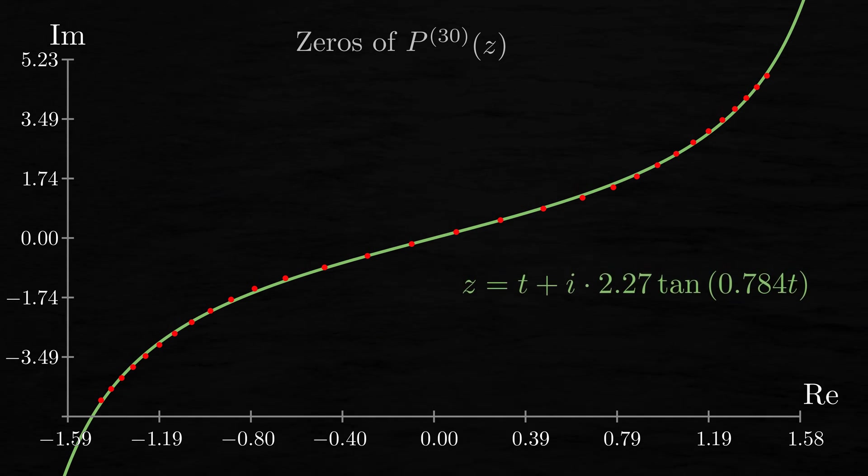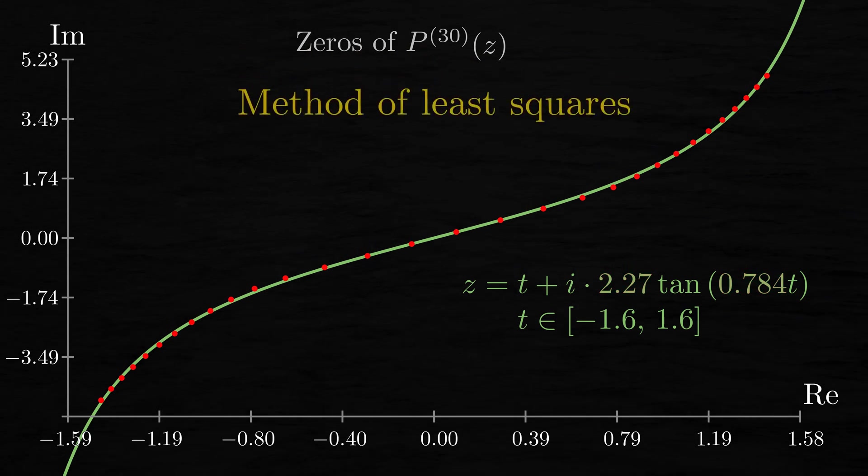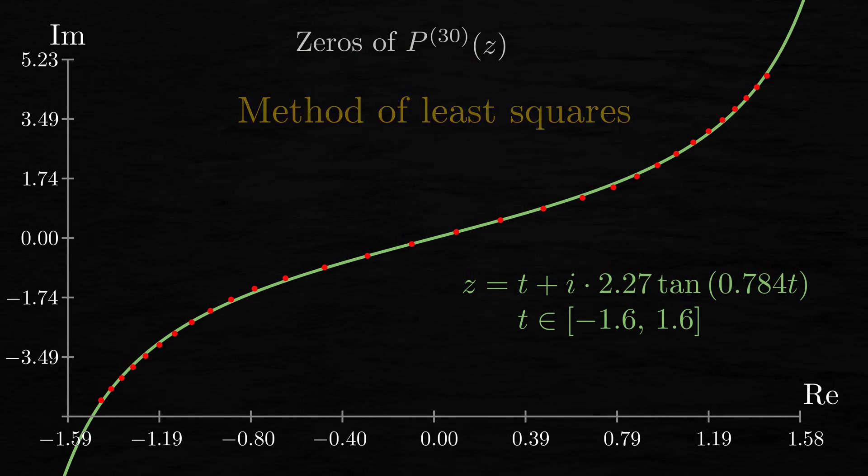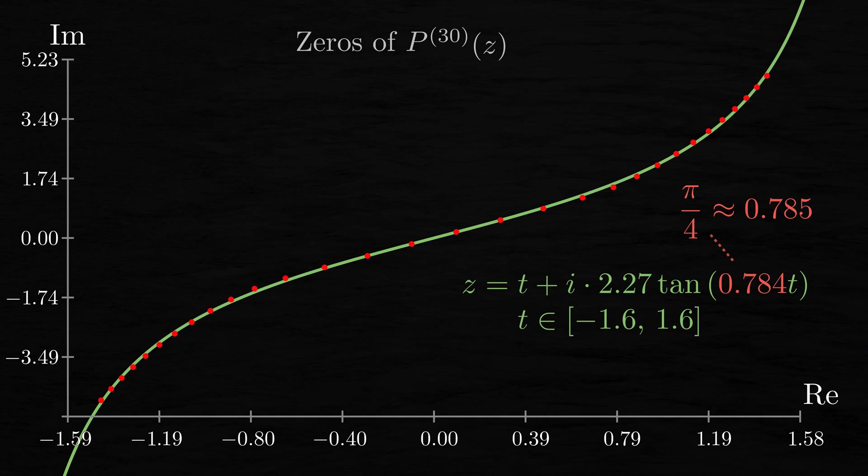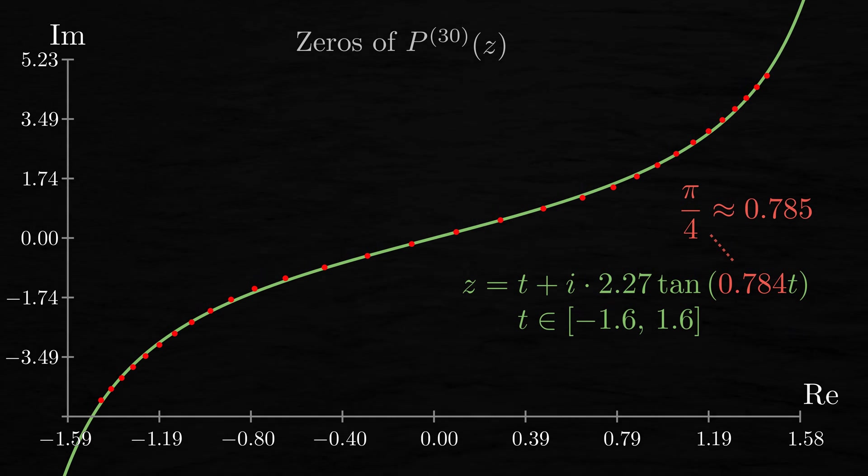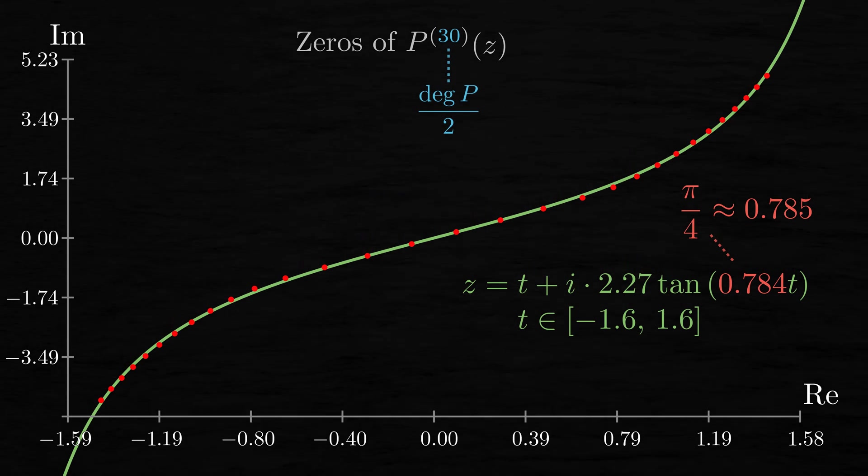Here we plotted the curve z equals t plus i times 2.27 times the tangent of 0.784t, with t going from about negative 1.6 to 1.6. The coefficients 2.27 and 0.784 in this particular case were found with a method of least squares. Note that the latter coefficient is quite close to pi over 4, that is, around 0.785. In addition, we get the best fit when the order of the derivative is 30, which is half the degree of the polynomial p. Isn't that really strange and fascinating?